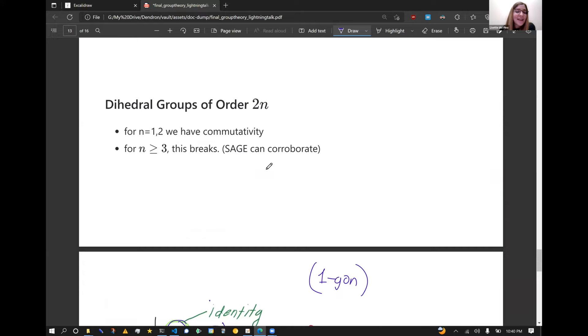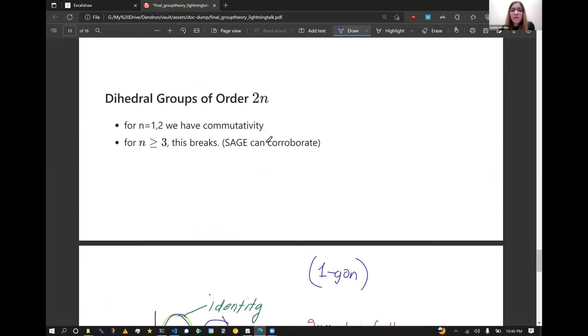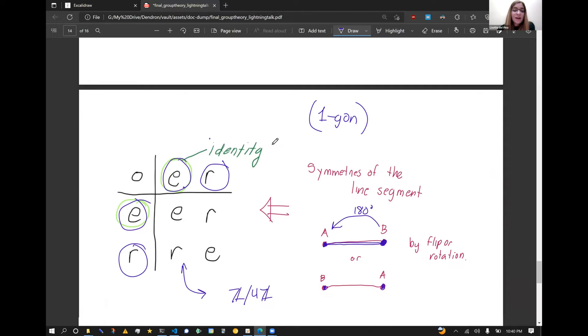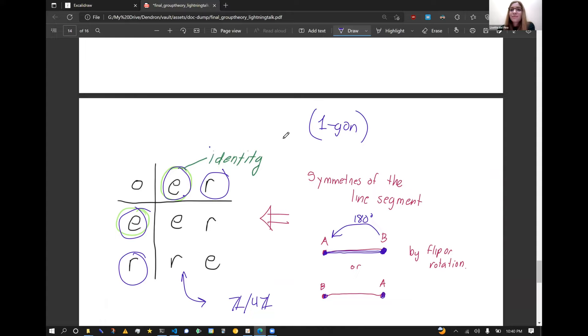All right. So that was pretty much my talk. I underestimated how long it was going to take me. But I hope you got a nice taste of group theory. I hope you're a little bit interested. It's a really beautiful field. You get to investigate abstract symmetries. It's very visual if you're a visual person. You can spend a lot of time drawing things out. And matrix groups are incredibly beautiful and relevant if you do data science. And that's my talk. Thank you.